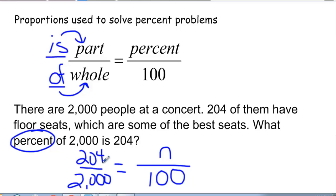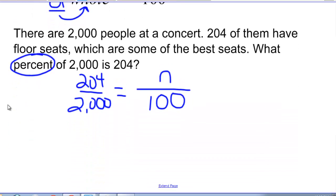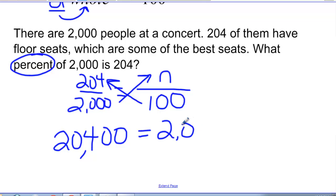Now I'm just going to cross multiply to solve that. So I will multiply this way and multiply that way, or you can think of it as multiplying the two diagonal numbers and dividing by the other numbers. That's going to be 204 with two zeros after it when I multiply it by 100 equals 2,000N. So I'm going to divide by 2,000.